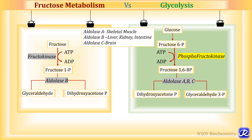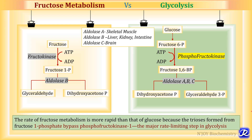Aldolase A is present in skeletal muscle, aldolase B in liver, kidney and intestine, and aldolase C in brain. The key difference from glycolysis is that the rate-limiting reaction catalyzed by phosphofructokinase is not present in fructose metabolism, and that's why fructose metabolism is more rapid than glycolysis. The rate of fructose metabolism is more rapid than that of glucose because the trioses formed from fructose 1-phosphate bypass phosphofructokinase-1, which is the major rate-limiting step in glycolysis.